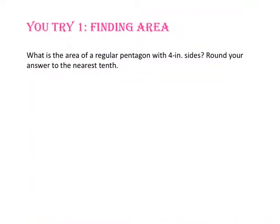Pause the video and do uTry number 1. What is the area of a regular pentagon with 4 inch sides? Round your answer to the nearest tenth. Let's start with the formula for the area of a regular polygon: area equals the apothem times the perimeter divided by 2. Since a pentagon has 5 sides and each side is 4 inches long, to find the perimeter we will take 5 times 4 and get 20 inches.